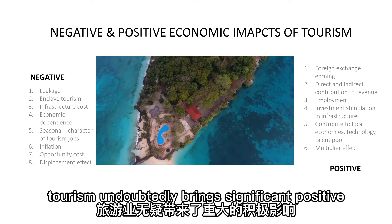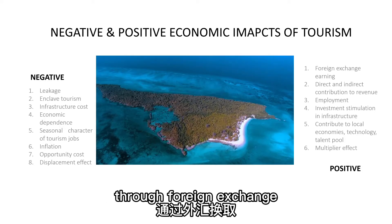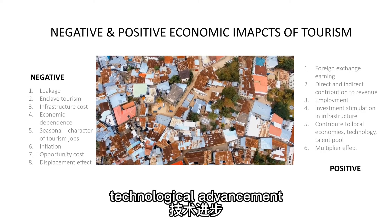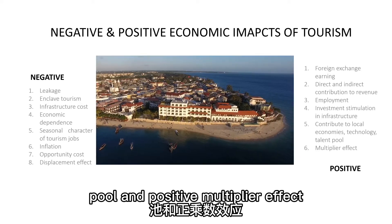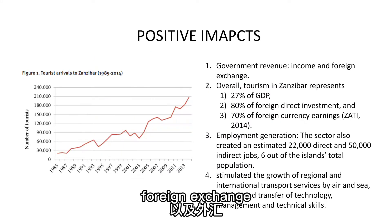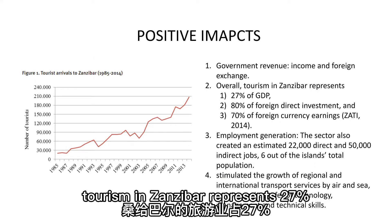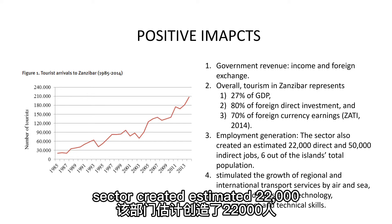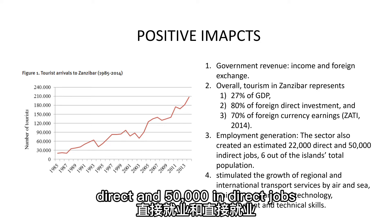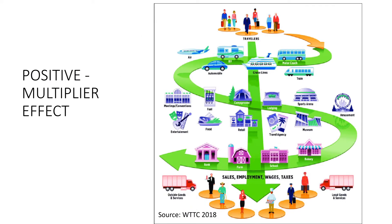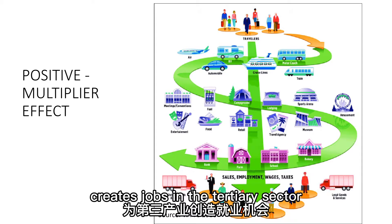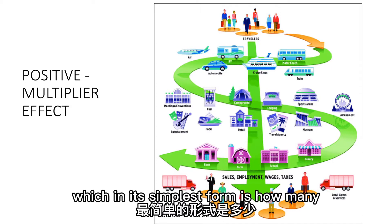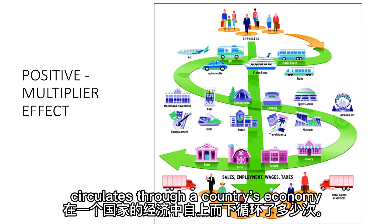Economically, tourism undoubtedly brings significant positive financial benefit through foreign exchange earnings, direct and indirect contribution to revenue, improved employment, investment stimulated in infrastructure, technological advancement, and positive multiplier effects. Tourism in Zanzibar represents 27% of GDP, 80% of foreign direct investment, and 70% of foreign currency earnings. The tourism sector created an estimated 22,000 direct and 50,000 indirect jobs. Tourism not only attracts investment and creates jobs in the tertiary sector — it also encourages growth in the primary and secondary sectors. This is known as the multiplier effect: how many times money spent by a tourist circulates through a country's economy. For example, money spent in a hotel helps to create jobs directly in the hotel, but also creates jobs indirectly elsewhere in the economy.